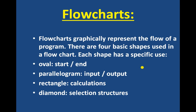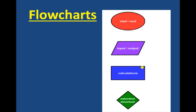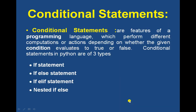Next are flow charts. Flow charts graphically represent the flow of a program. There are four basic shapes used in a flow chart: an oval is used for start and end, a parallelogram is used for input and output, a rectangle is used for calculations, and a diamond represents the selection structure. The diagram shows the oval, input and processing, rectangle for calculation, and the selection structure.